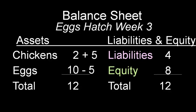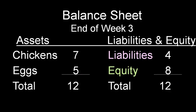In week three, something else happens: the eggs laid in week one have hatched — and this also shows the flexibility of double-entry accounting. Nothing has occurred on the right side of the balance sheet. We're going to transfer five out of eggs and into chickens — just a recategorization of assets. The claims of the company and the lender haven't changed. Here's the balance at the end of the week: we now have seven chickens and five eggs. Of the twelve, the lender has a claim of four, and the company gets to keep eight.